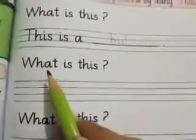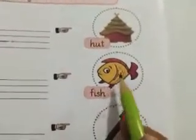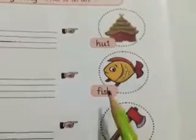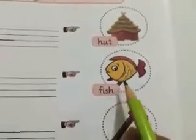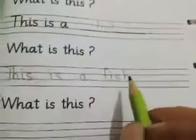The second question is: What is this? This is a fish. So we will write here: This is a fish. That's it.